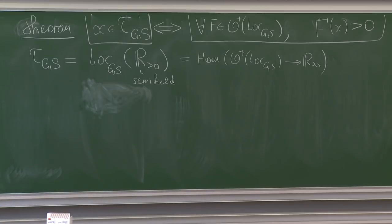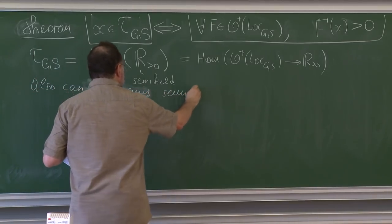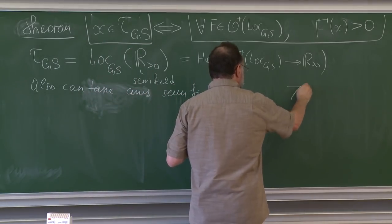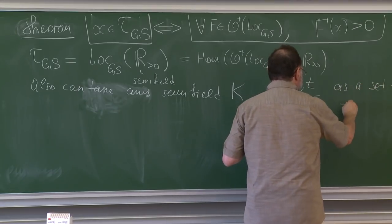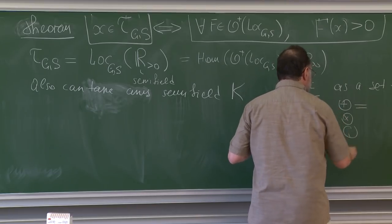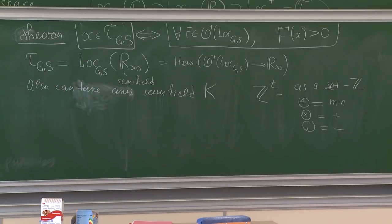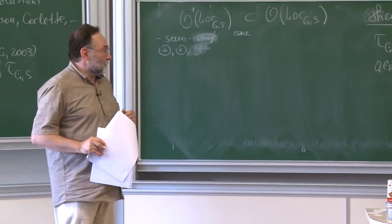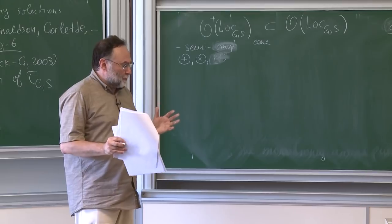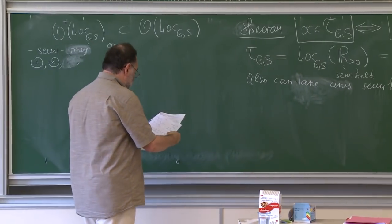We have positive numbers, and we can add, multiply, and divide them — but not subtract. We also can take a maximum. Most importantly, we have multiplication corresponding to usual addition. So this is a semi-field. What I was trying to say: you can take any semi-field. One interesting semi-field is Z_T — the tropical integers. This is just Z with operations of minimum, addition (usual), and subtraction. These are the tropical numbers.